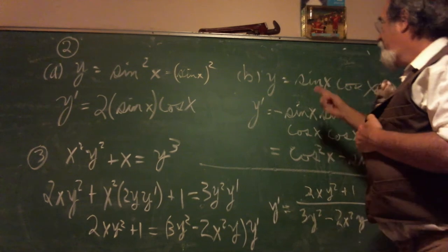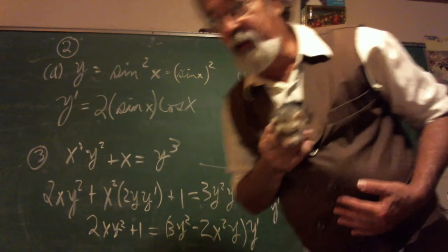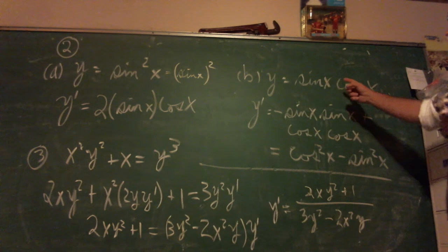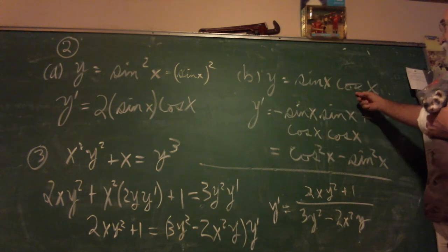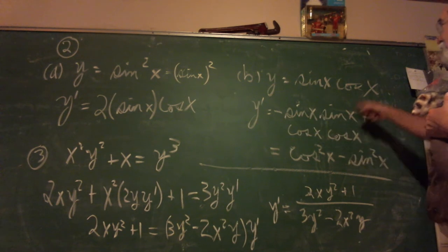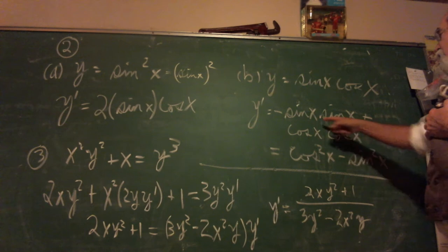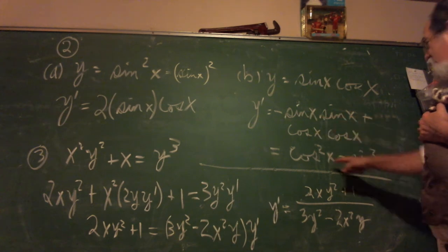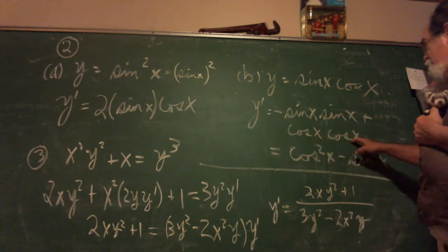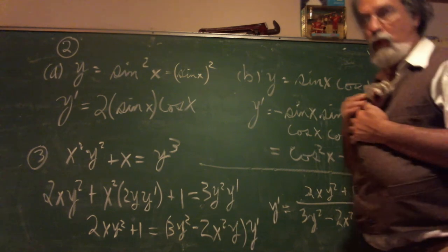This guy, sine x times cosine x, product rule. Gotta do product rule. So it's the derivative of cosine, which is negative sine, times sine x, so it's negative sin x·sin x. And then the derivative of sine, that's cosine x times cosine x. So it's negative sin²x + cos²x. That's your answer, that's your full credit answer: cos²x - sin²x.